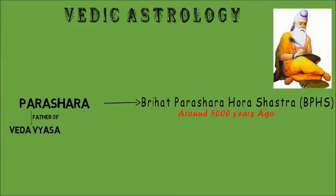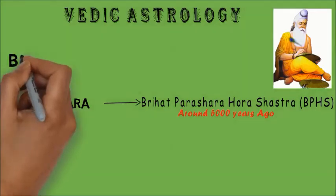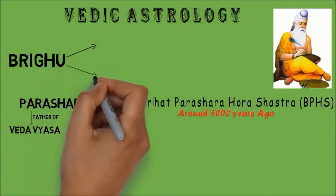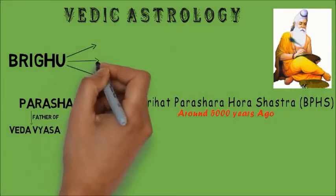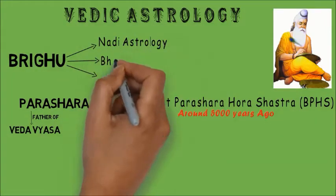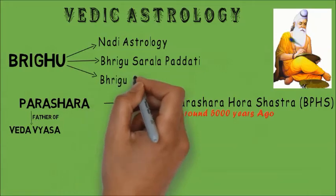But astrology was present before him too. One of the seven Saptarishis, Bhrigu, is considered to be the originator of astrology. He created branches like Nadi Astrology, Bhrigu Sarala Paddhati and Bhrigu Chakra Paddhati.